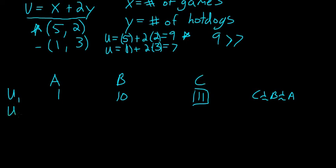So, if I had another utility function, I call it utility two, that was one, two, and ten, this would give me the exact same information as the previous one.